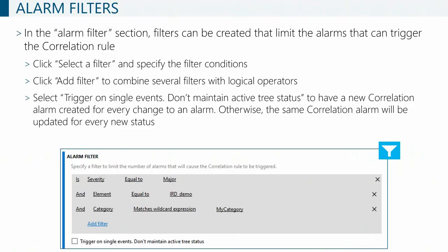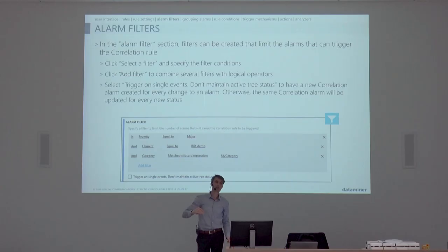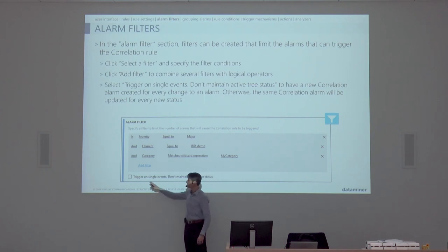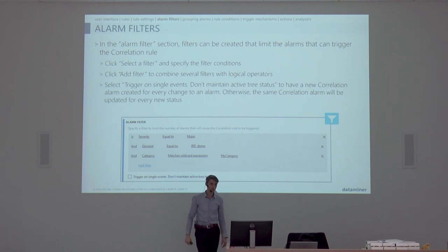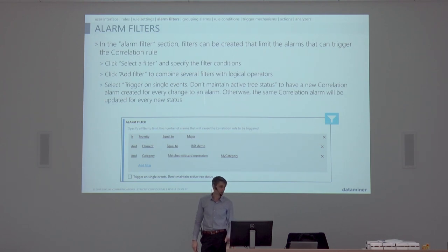That was the detail section. Underneath it we start with 'when' — the filter. The most simple form is a filter. Our first exercise will be: if a critical alarm happens on my element. Here you see it's a major with another condition. You can already be happy with just that filter — and that's going to be our first exercise. Regarding alarm updates, by default you don't trigger on every alarm update, so you can leave that disabled.